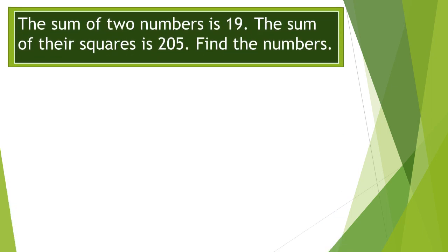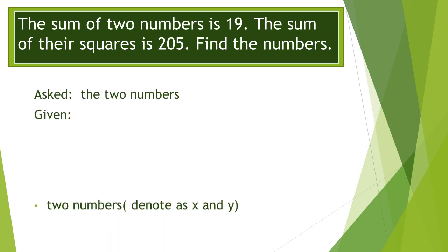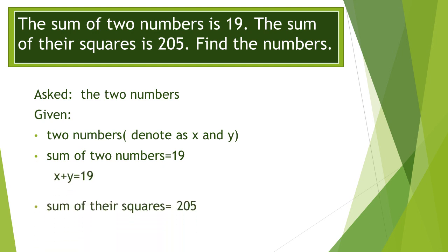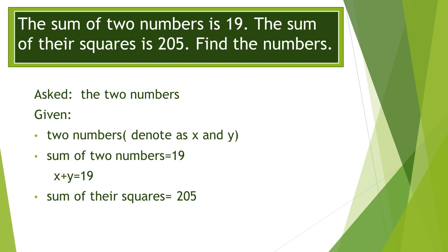Let's now move on to the last example. The sum of two numbers is 19, and the sum of their squares is 205. Find the numbers. What is asked are the two numbers, which are unknown, so we denote them as x and y. The sum of the two numbers gives the equation x plus y equals 19, and the sum of their squares gives x squared plus y squared equals 205.